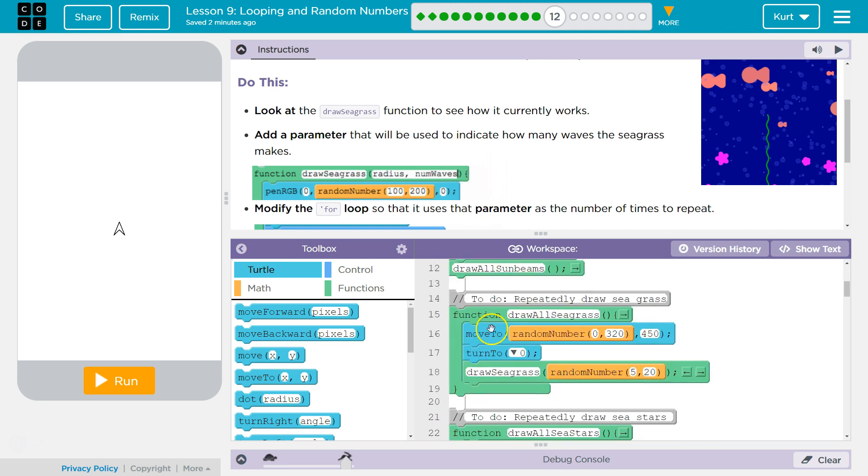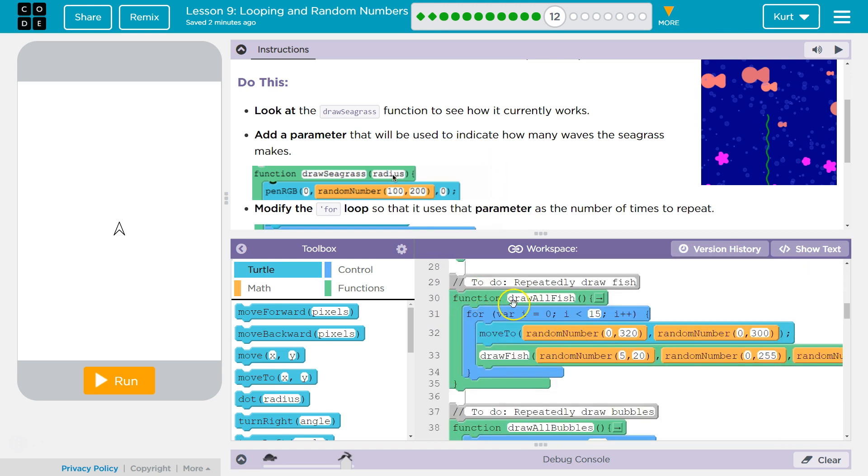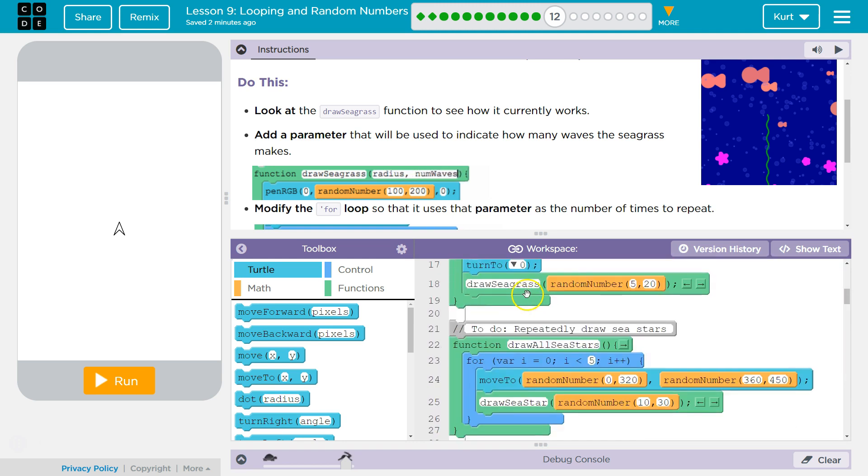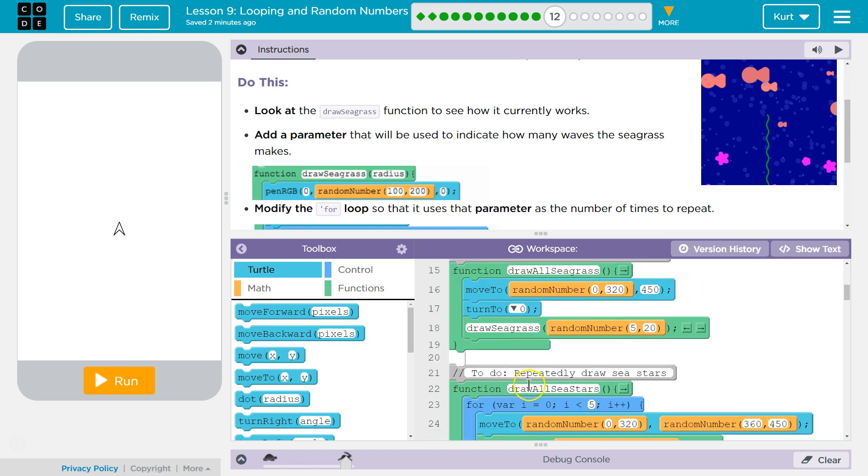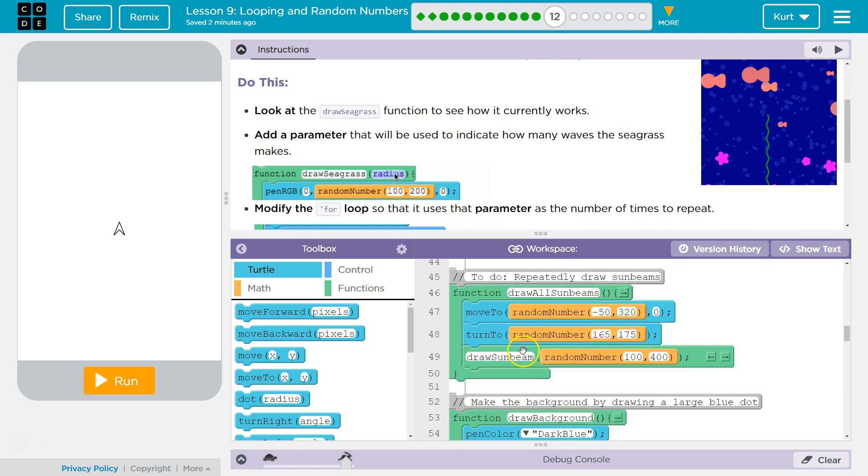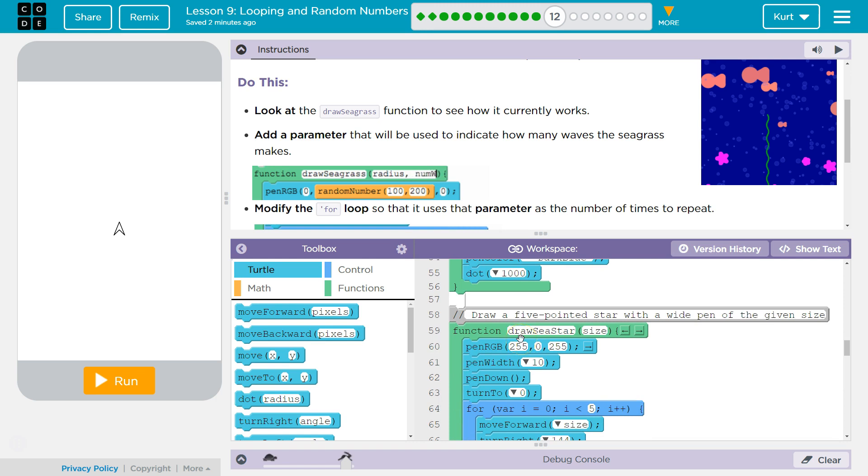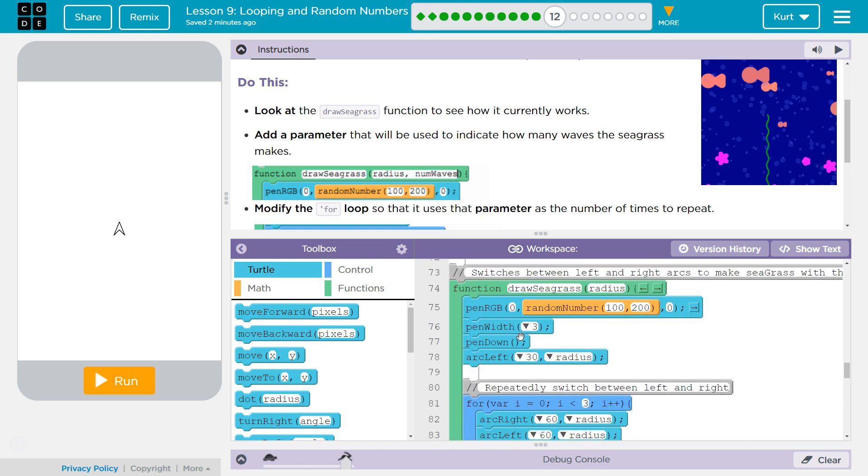So let's go find the Draw Seagrass. They're calling it a lower level function in part because it's being called by another function. And you don't see it in the main or the top part of the code. It's being called within another function. But Draw Seagrass.